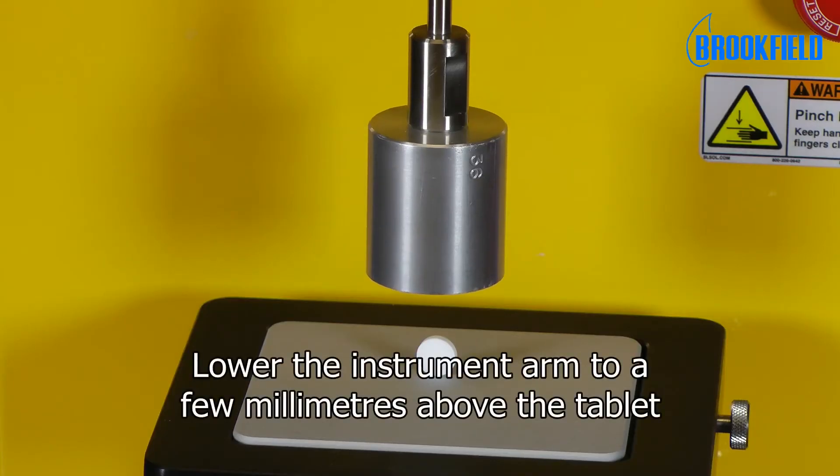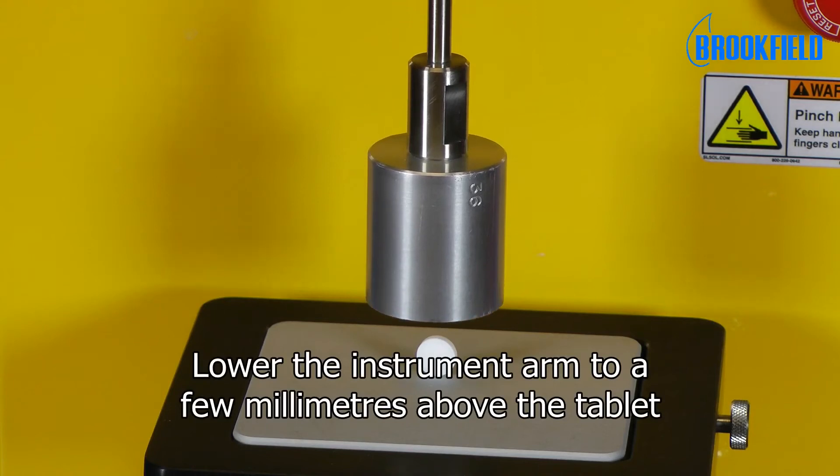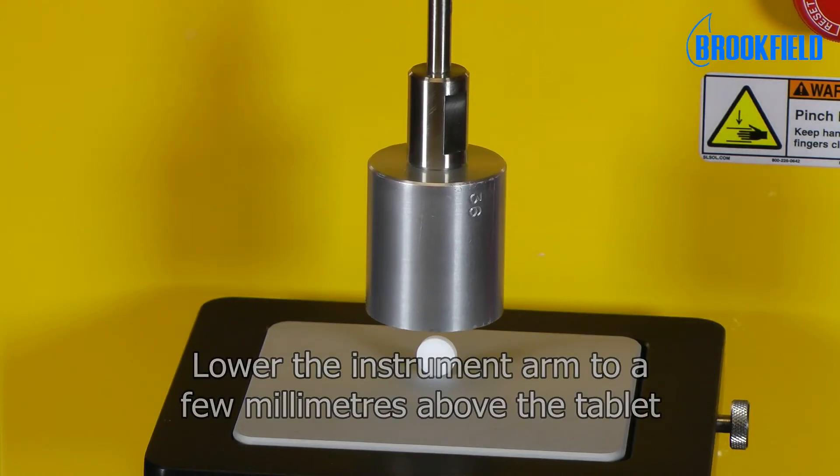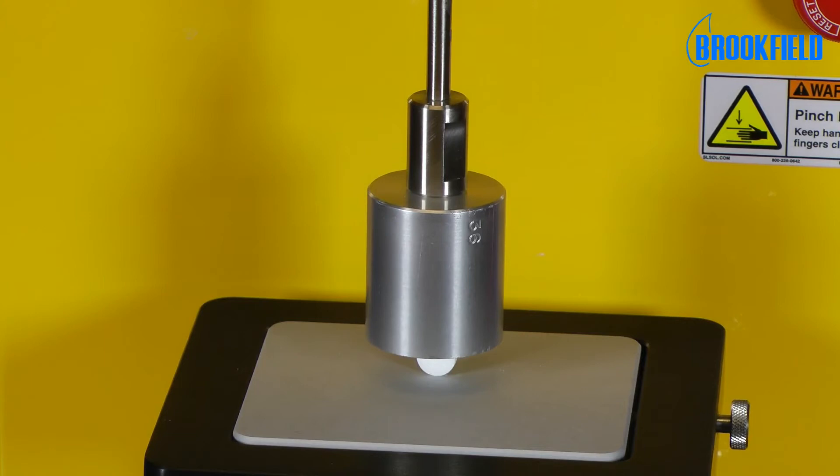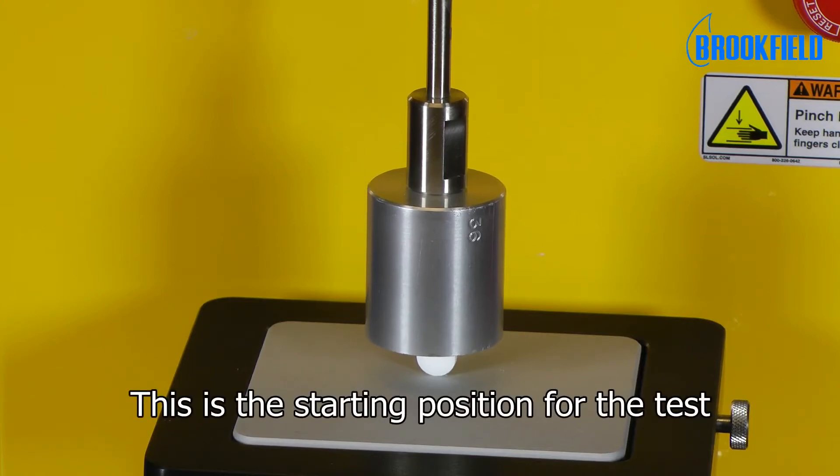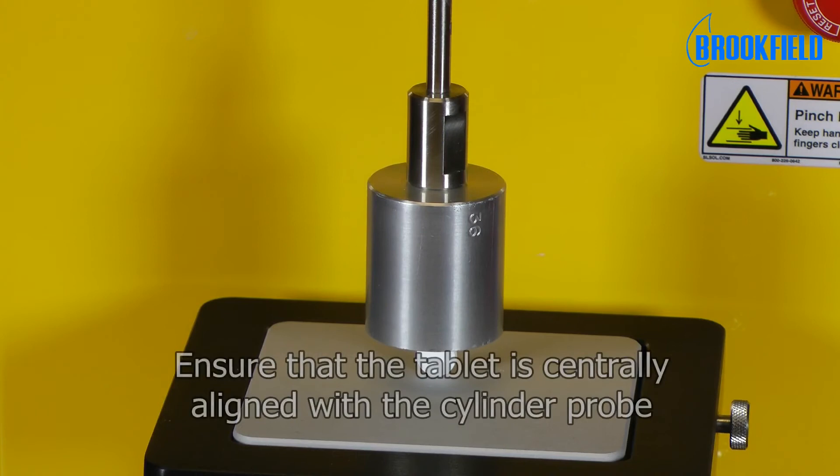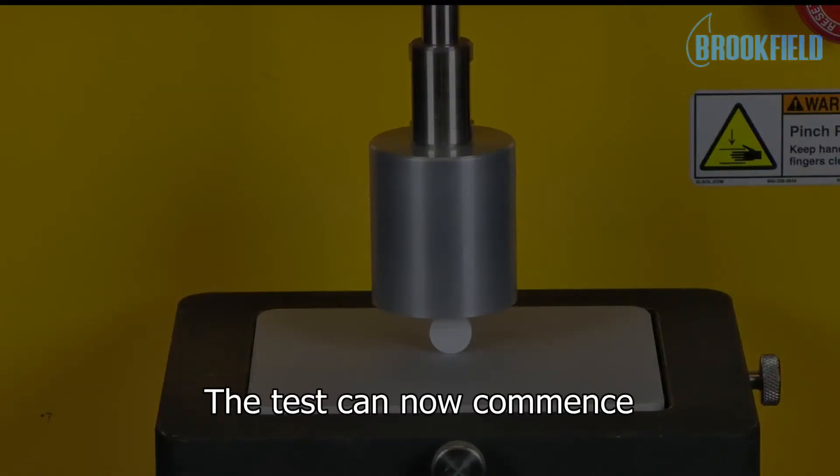To ensure that the tablet is centrally under the probe, lower the instrument arm to a few millimeters from the tablet surface. This can be the starting position for the test. Ensure that the tablet is centrally aligned under the probe. The test is now ready to begin.